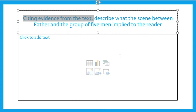Describe what the scene between Father and the group of five men implied to the reader. Bruno overhears the men talking about the previous commandant. Ask yourself, does it sound like they thought he was doing a good job? And kind of go with that as you're writing your response here.